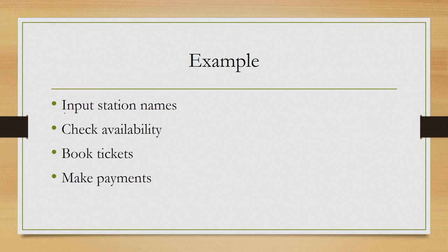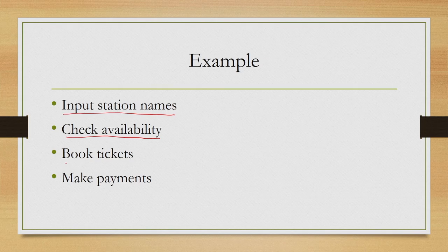The user should be able to input the name of the station, check the availability of seats in the train between stations. If seats are available, then the user should be able to book the tickets and finally, once the ticket booking is done, he or she should be able to make payments. These are the fundamental tasks that a user — a traveller or an agent — is expected to perform. In other words, the system is expected to help the user perform these tasks.